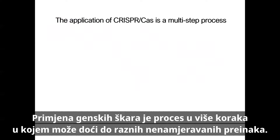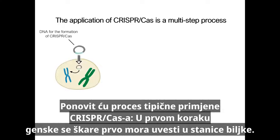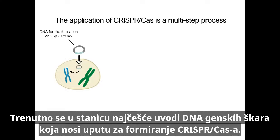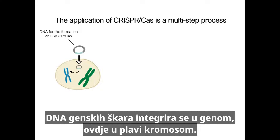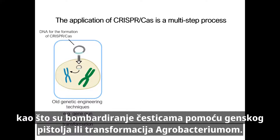The application of gene scissors is a multi-step process in which various unintended alterations can occur. In a typical CRISPR-Cas application, the gene scissors must first be introduced into the plant cells. Most often, the DNA of the gene scissors is introduced into the cell, which carries the DNA for the formation of CRISPR-Cas. The gene scissors DNA is integrated into the genome — here into the blue chromosome — using old genetic engineering techniques such as particle bombardment with the gene gun or agrobacterium transformation.